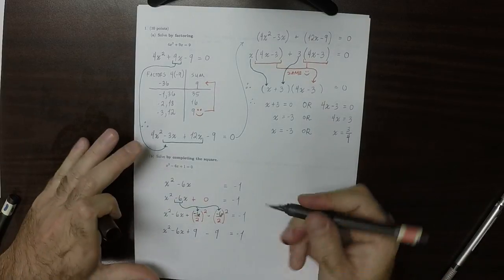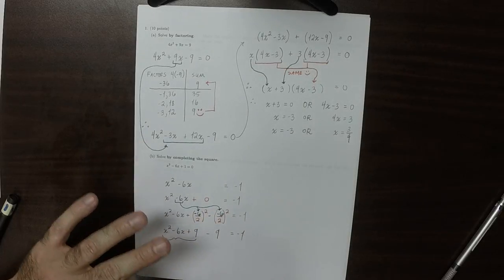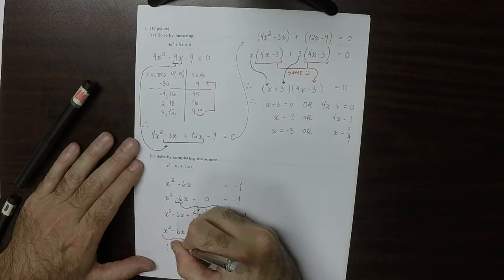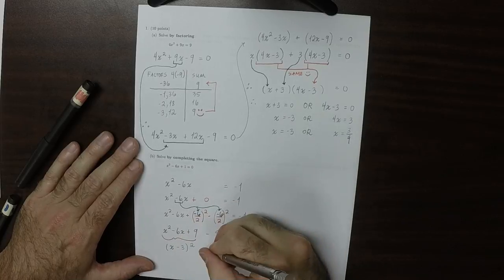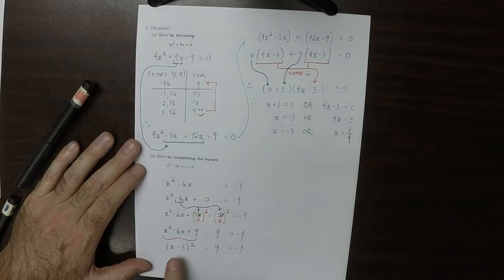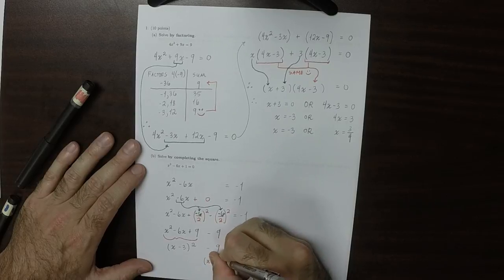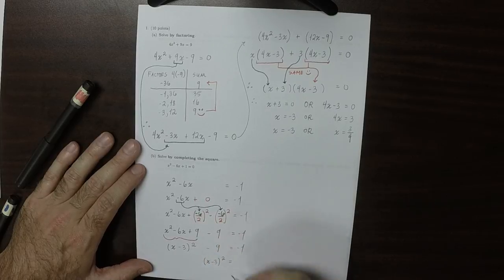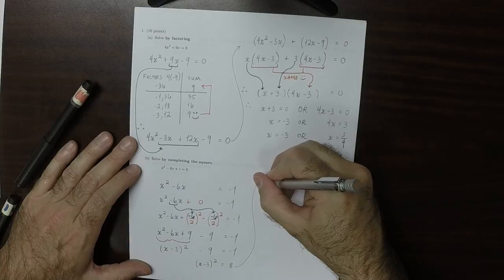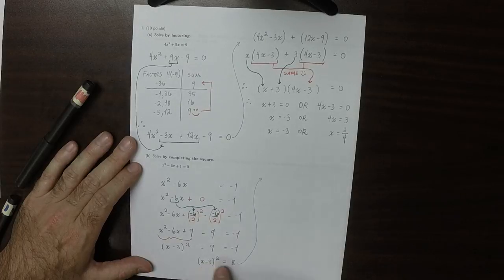These three terms are now a perfect square, and we can factor them as (x minus 3) squared, and then minus 9 equals negative 1. So now I'm going to move that 9 over: (x minus 3) squared equals 8. Now we have a far simpler equation — something squared equals 8.